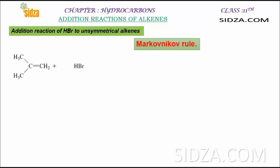If we have an asymmetrical alkene, how can the addition of HBr take place? The addition of HBr or any hydrogen halide follows Markovnikov's rule. In our previous examples we were discussing the addition of HBr, HCl, HI to a symmetrical alkene. Symmetrical alkenes have the same groups across the double bond. But with an asymmetrical alkene, where one side has two methyl groups and the other side has two hydrogen atoms, we need Markovnikov's rule.